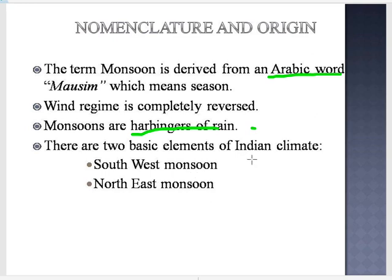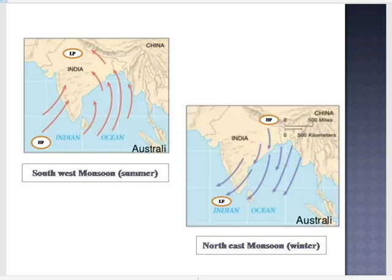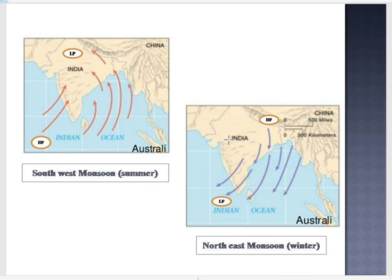There are two basic elements of Indian climate: the southwest monsoon and the northeast monsoon. The southwest monsoon occurs during the summer season, with wind blowing from the southwestern region — from the Indian Ocean to the Indian subcontinent — where there is low pressure because the sun rays are vertical over the Tropic of Cancer. The northeast monsoon occurs in the winter season; it is also known as the retreating monsoon. Here, high pressure develops in the Indian subcontinent, and wind blows from the high pressure to the low pressure — from the Indian subcontinent to the Indian Ocean.